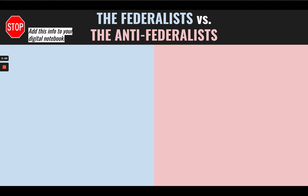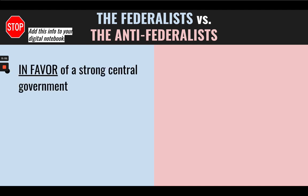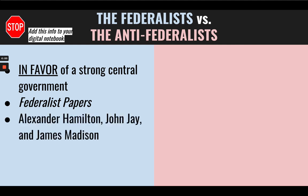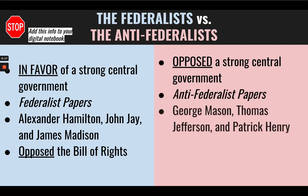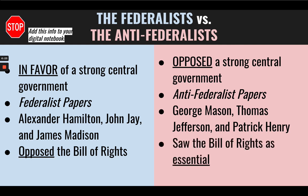This brings us to the Anti-Federalists and the Federalists. The Federalists were in favor of a strong central government. They wrote the Federalist Papers. Alexander Hamilton, John Jay, and James Madison are their most notable leaders, and they opposed the addition of a Bill of Rights. On the other side, the Anti-Federalists opposed a strong central government. They wrote the Anti-Federalist Papers. George Mason, Thomas Jefferson, and Patrick Henry are their notable leaders, and they saw the Bill of Rights as essential to protecting the rights of the people.